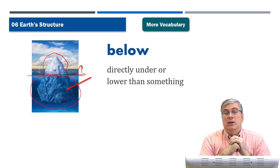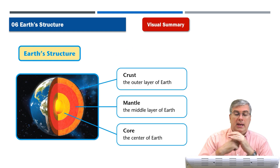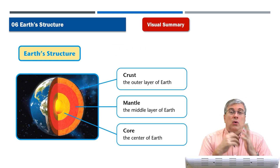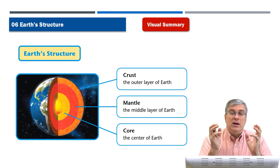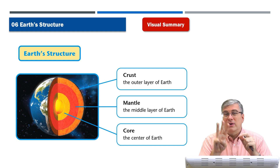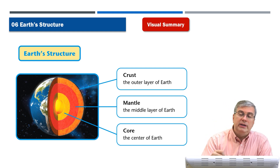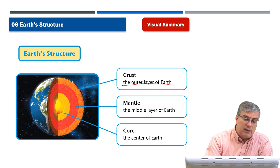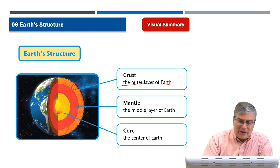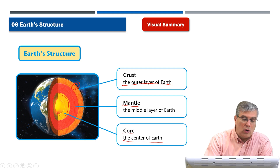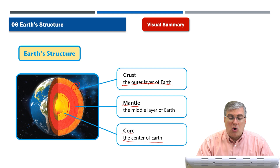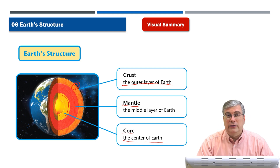So those are our words for the lesson. Now, one of the main ideas of this lesson is to find out what is the structure of the earth. We talked about the earth having three main parts: the crust, which is the outer layer of the earth; the mantle, which is the red part; and then the core, the center of the earth. The core is the center — it's very hot there. These are the three different parts of the earth's structure.